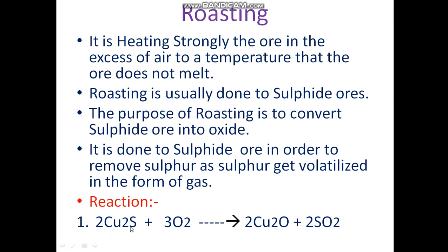Here we can see the example of copper sulphide. The purpose of roasting is to convert the sulphide ore into oxide, which is heated in the presence of oxygen. What we get here is copper oxide, and sulphur dioxide is given out. Roasting is done to sulphide ores in order to remove the sulphur, as sulphur gets volatilized in the form of sulphur dioxide gas.